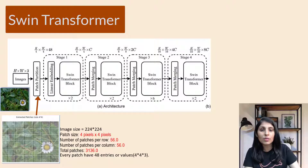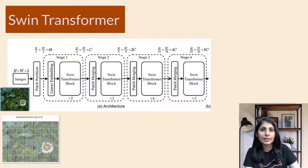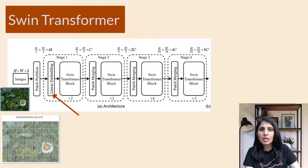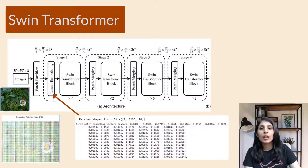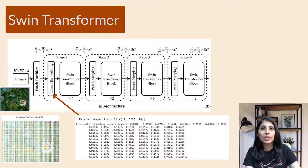Once patchification is done, we move to the linear embedding layer. The linear embedding layer converts the input data into a format that can be processed by a transformer model. Images are made up of pixels, but transformers work with sequences of tokens. So we need to convert the image patches into a sequence of tokens. Linear embedding converts the image pixels into a numerical vector representation, which is then fed as input to the transformer layers.